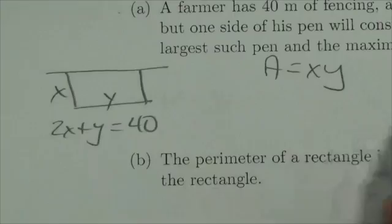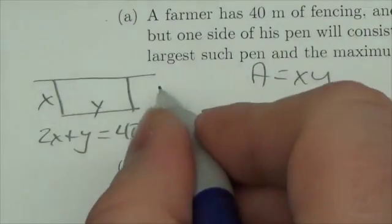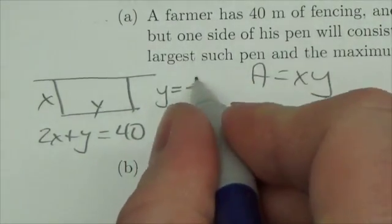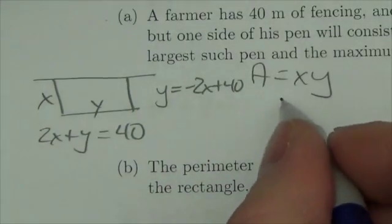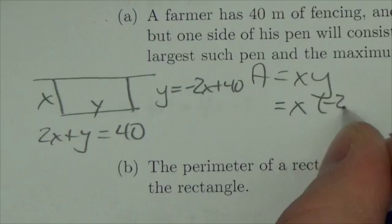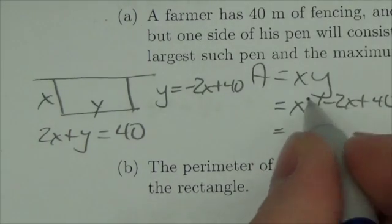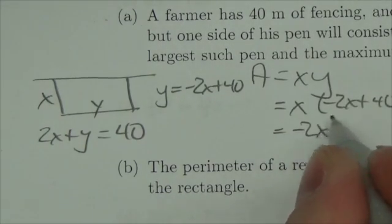So I go back to my equation about perimeter here and I'm going to solve for one of those variables. I'm going to solve for Y, so Y will equal negative 2x plus 40. And when I plug that in I'll get X times negative 2x plus 40. Multiply that through and I'll get negative 2x squared plus 40x.